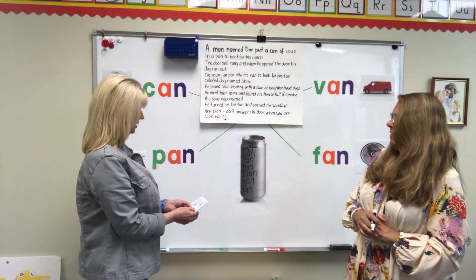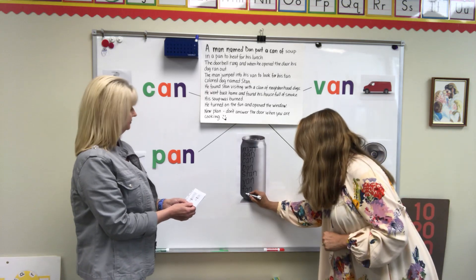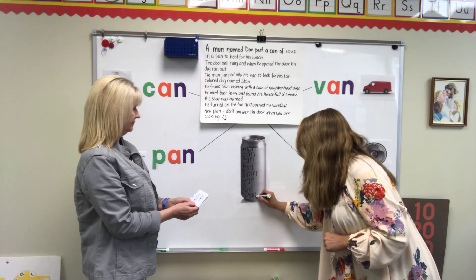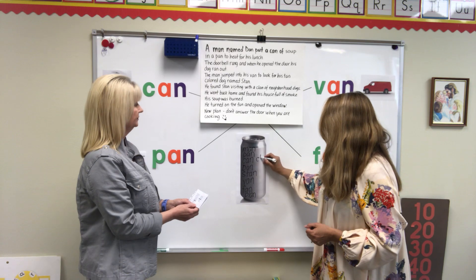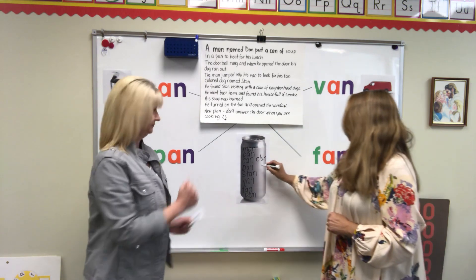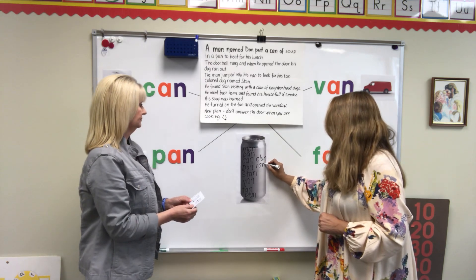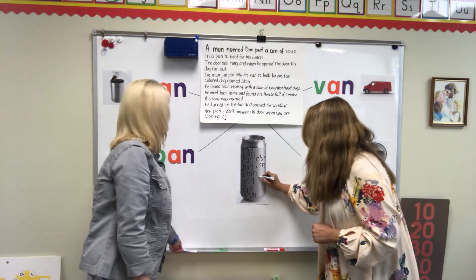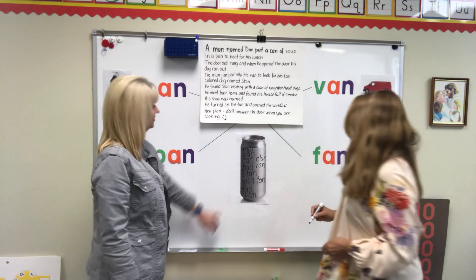I have four more. Plan — P-L-A-N. And clan — C-L-A-N. Ran — R-A-N. And tan — T-A-N. Tan.